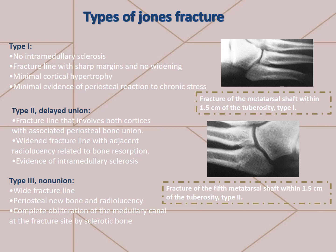In the first picture, we will see a fracture of the metatarsal shaft within 1.5 cm of the tuberosity. This example is an acute Jones fracture, and cortical hypertrophy is not present in this example.